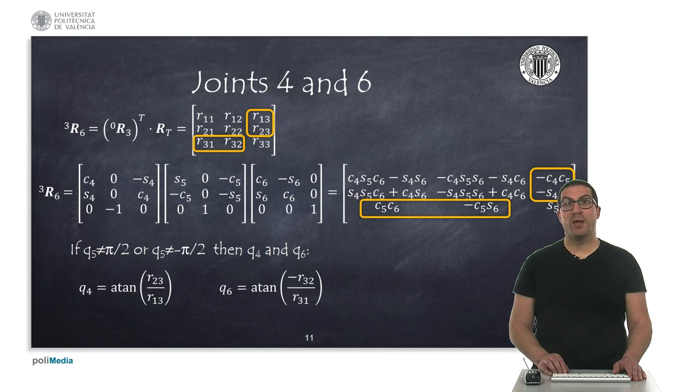In a general case, anyway, the values for joints 4 and 6 can be computed from the relationships of the elements in the third column and the third row as highlighted. As you can see, there is a common term in all these elements that can be cancelled out if, only if, Q5 is different from half pi or minus half pi.